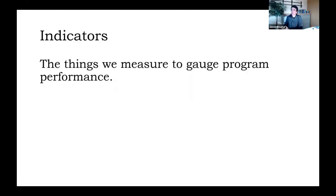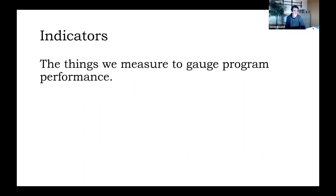So I mentioned indicators are the things that we measure to gauge program performance. For our purposes, just by way of example, we're going to imagine that we are doing a program evaluation of a school district's summer lunch distribution program. And we can imagine these indicators at different points in the logic model.